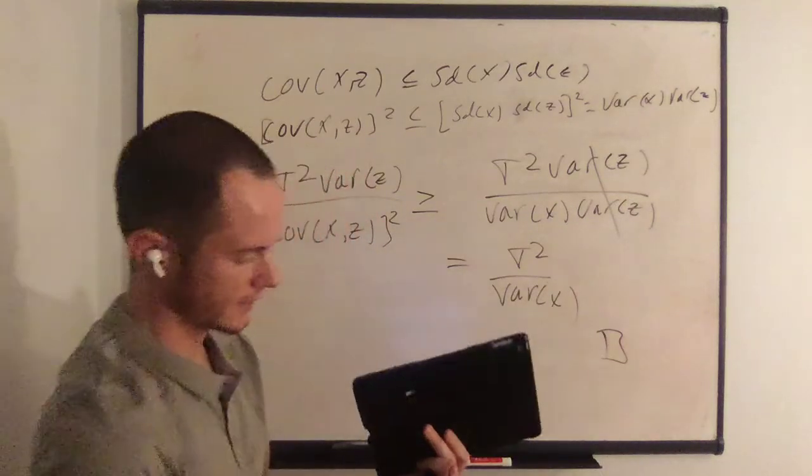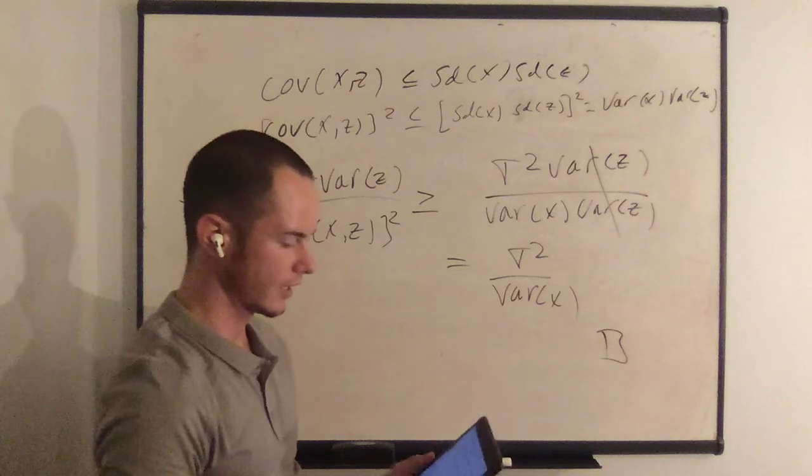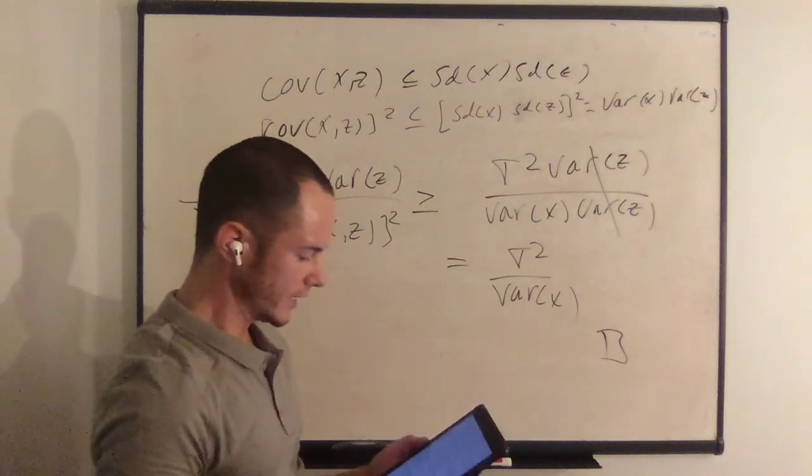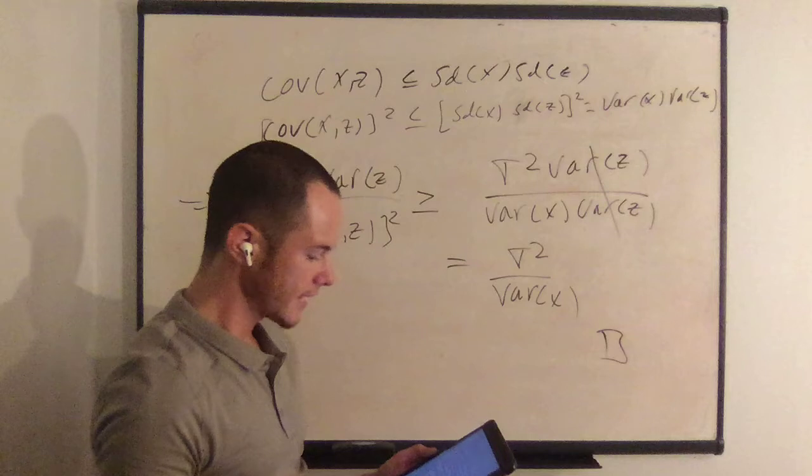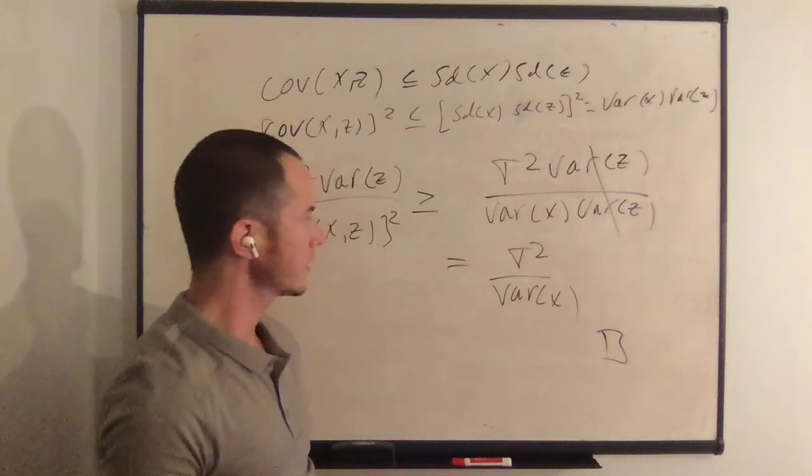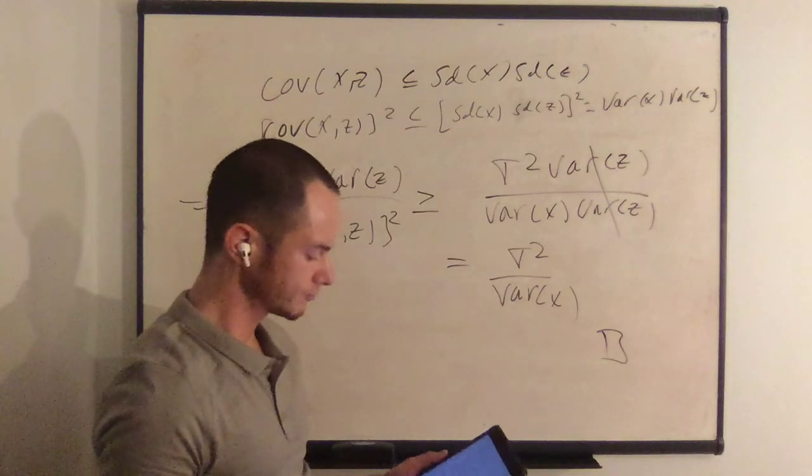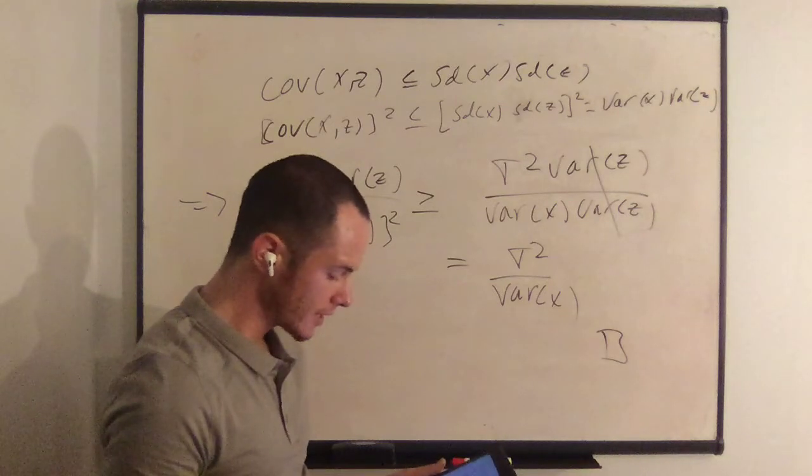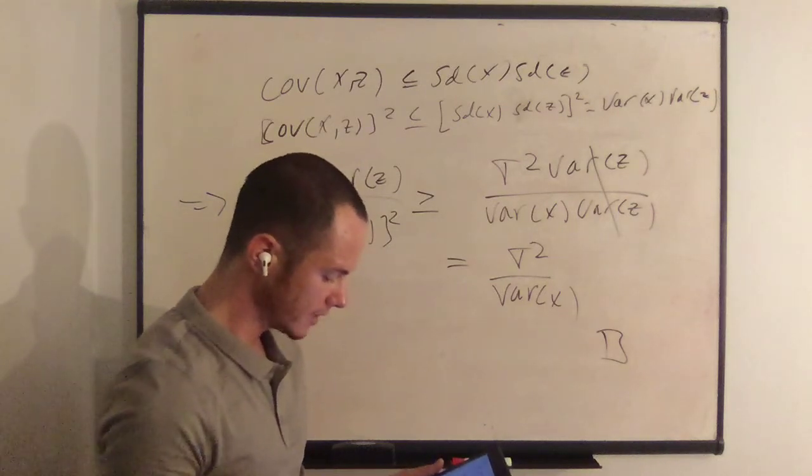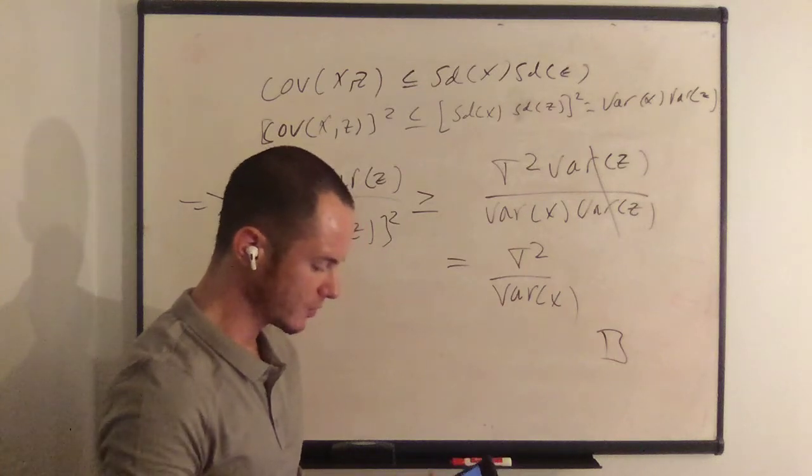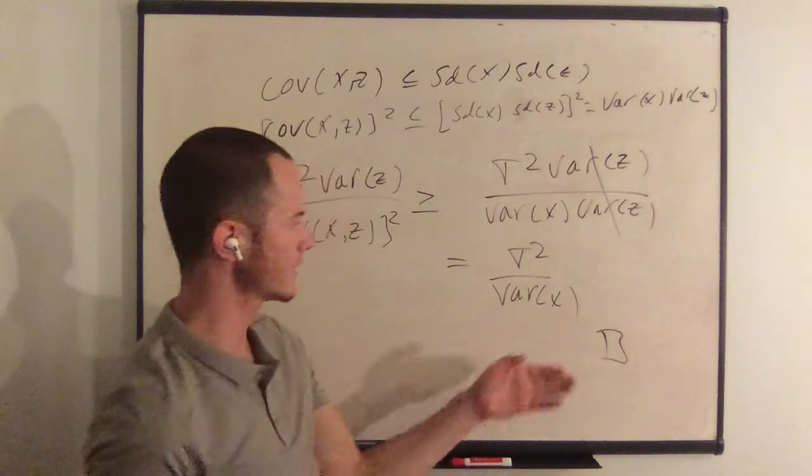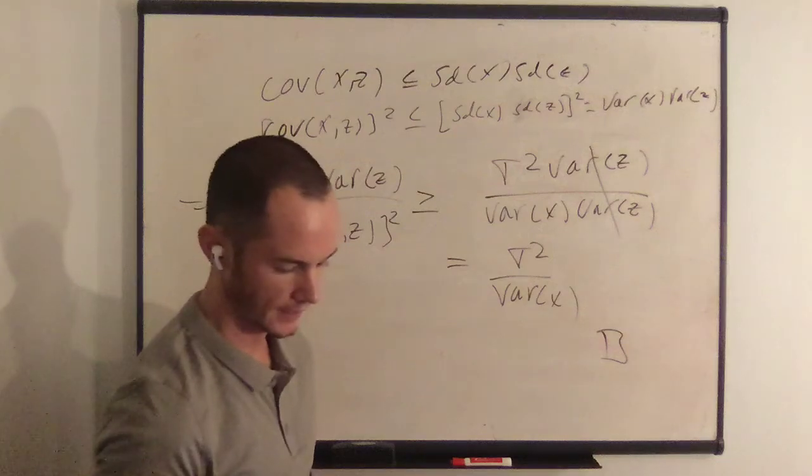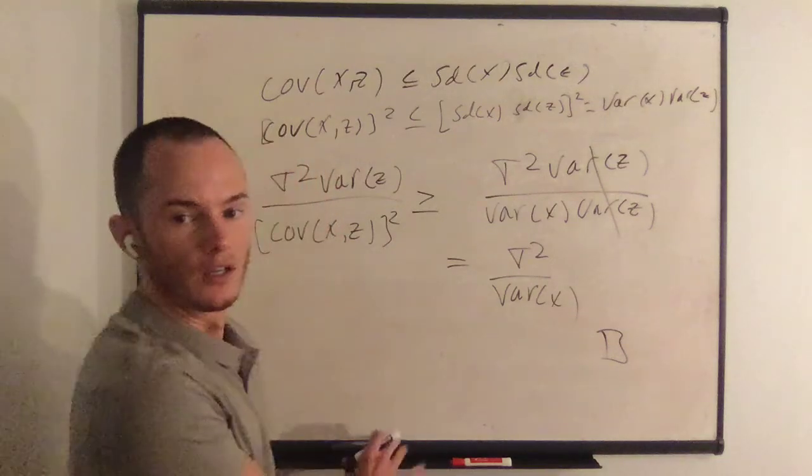And we have shown that any other estimator in the class of unbiased estimators, OLS is the most efficient because it has the smallest variance.